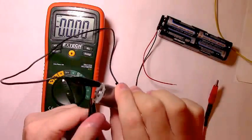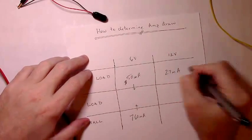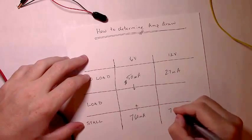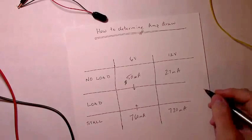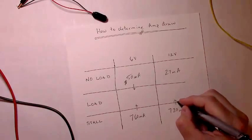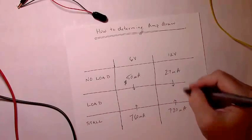After we've done that, now we can record our numbers. Around 27 milliamps at no load. Around 720 milliamps at stall. So you know that your load amp draw is going to be somewhere in between these two numbers.